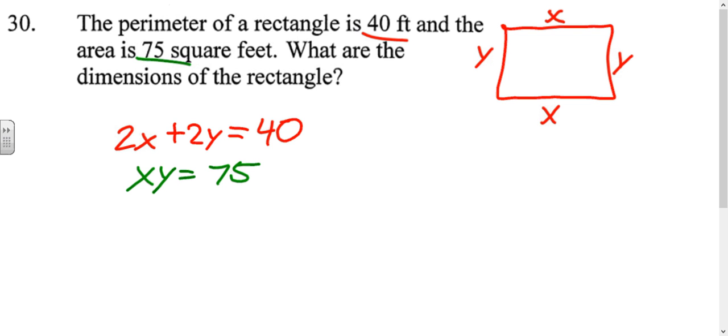So we need to solve this by substitution. If we solve the top equation for y, our first step would be to move the 2x. So we get 2y equals 40 minus 2x. Divide everything by 2. We get y equals 20 minus x. And we're going to take the 20 minus x, plug it into the other equation in place of the y, so it would be x times 20 minus x equals 75.